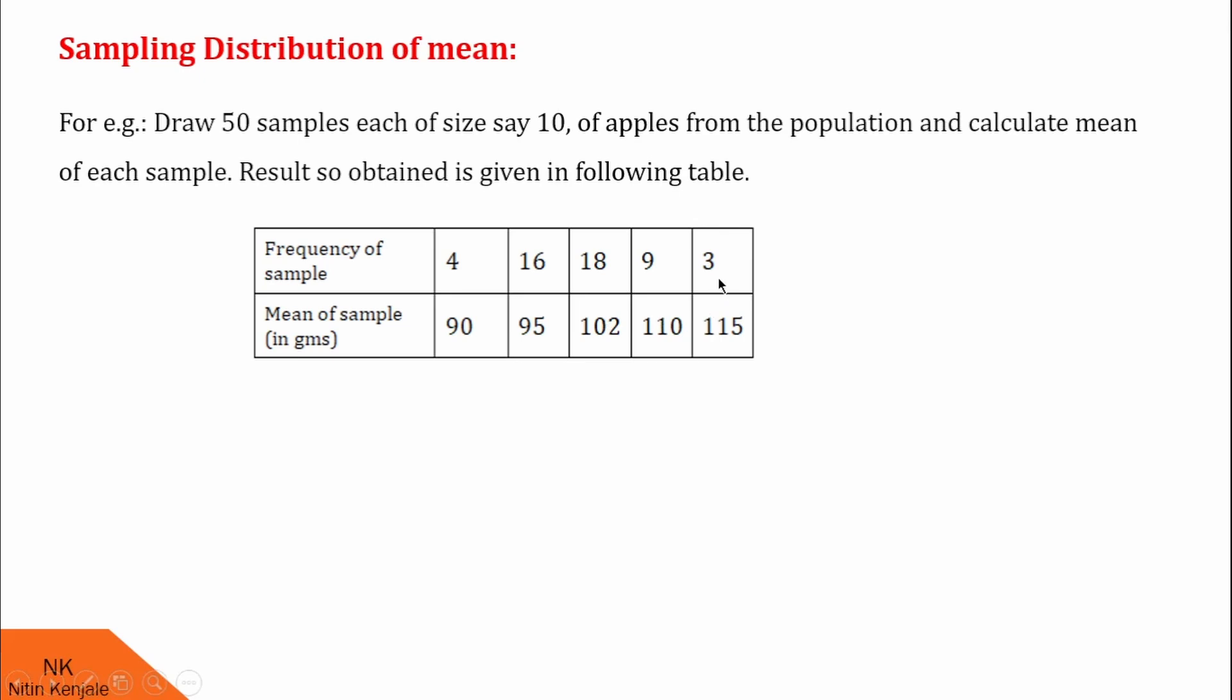Similarly, at the end we see there are 3 samples in which the mean of the sample is 115 grams. This frequency distribution table is referred as sampling distribution of the mean in this particular example.